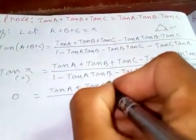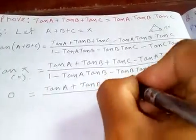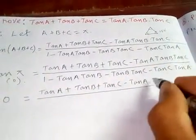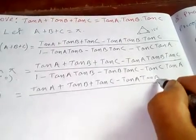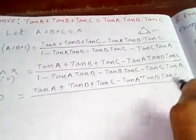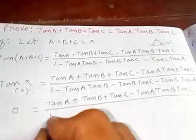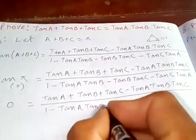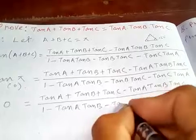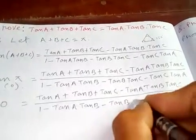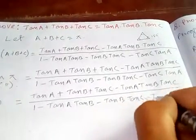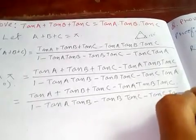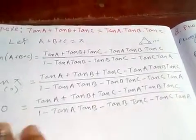So we have tan A plus tan B plus tan C minus tan A tan B tan C over 1 minus tan A tan B minus tan B tan C minus tan C tan A. Just cross multiply.